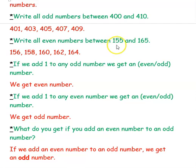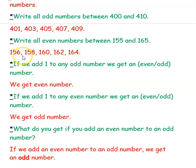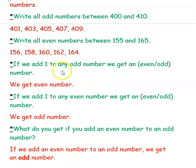Write all the even numbers between 155 and 165. Since 155 ends in 5 it is not even, so we start with 156, then 158, 160, 162, 164. Even numbers always end with 0, 2, 4, 6, and 8. If you add 1 to any odd number you get an even number, and if you add 1 to any even number you get an odd number — they alternate.